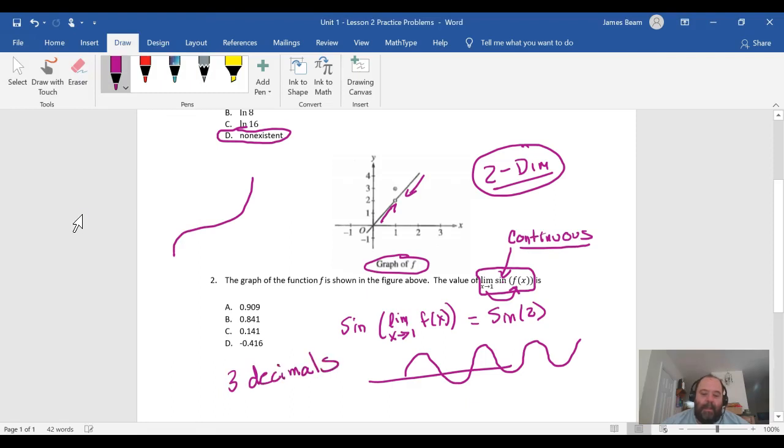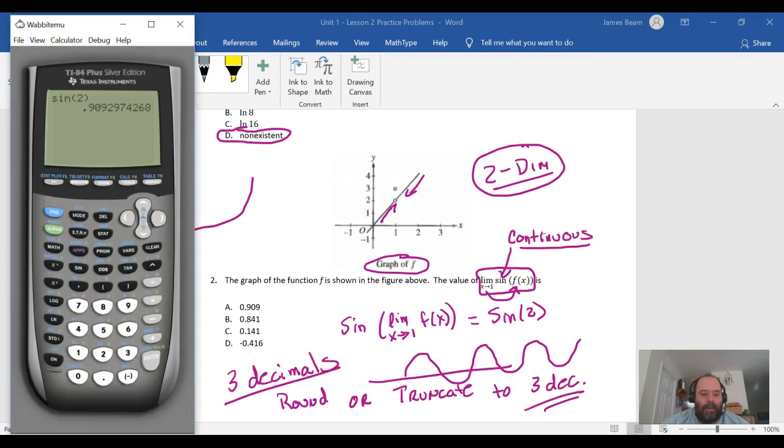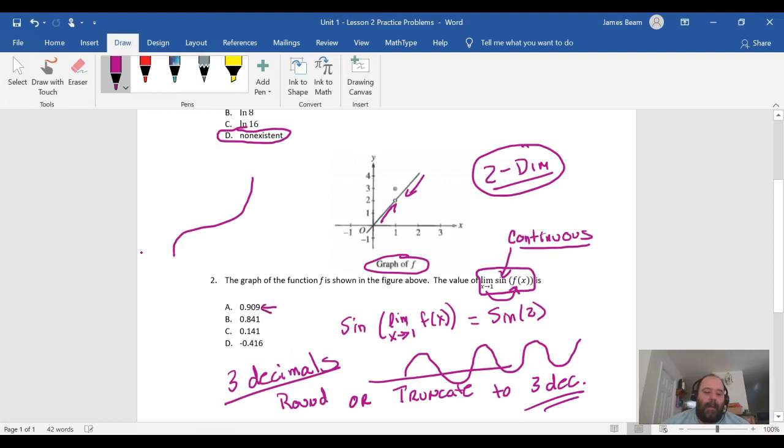So the standards for the BC exam is that you can either round or truncate to three decimal places. You have to have at least three, but you can round or truncate to three—that's the degree of precision that they require. So this is why I can stop at the 0.909. Now here, both the rounding and the truncating give me the same number—they give me the 0.909.